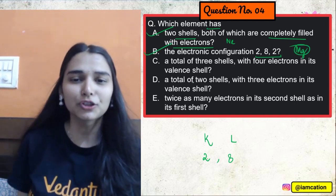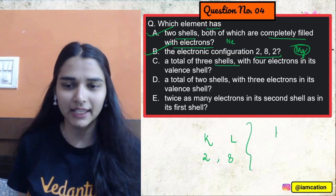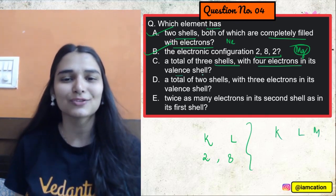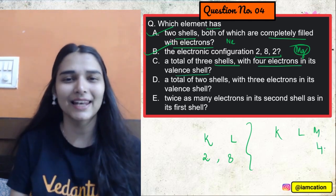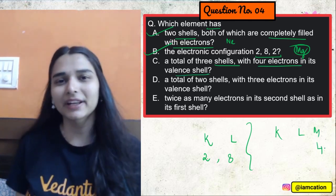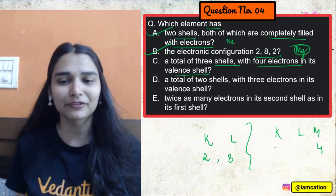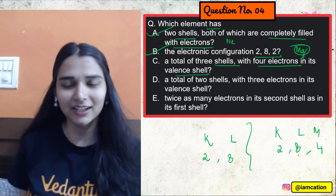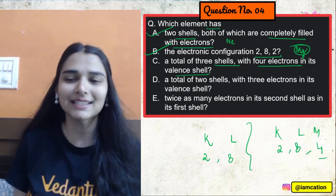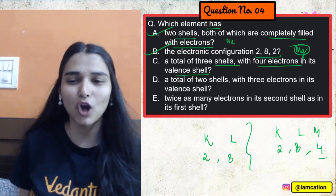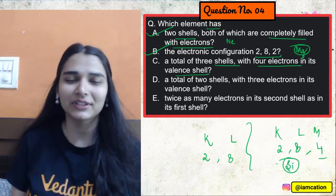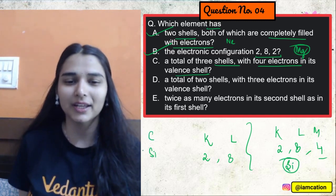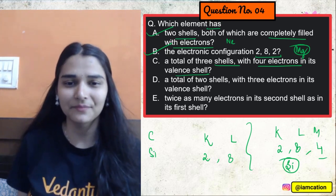A total of three shells. K, L, M. With four electrons in the valence shell. Four electrons in the M shell. Now, four electrons would have been filled in M only if the inner shells are completely filled. Then K and L are completely filled. Tabi to M mein 4 electrons jayenge. What is this element? Atomic number 14. This is our silicon. Just carbon ki neeche rakha hua hai. Easy?